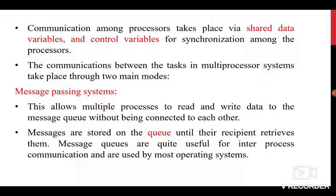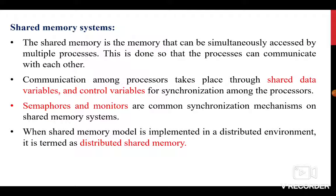In the message passing system, the sending process and the receiving process communicate with one another using read and write primitives, and the read and write operations take place through a message queue. The sender and receiver are not connected directly — the message queue sits between them. Messages are stored in the queue until the recipient retrieves them. These are very useful for inter-process communication, and message queues are used by most operating systems.